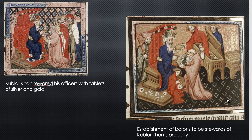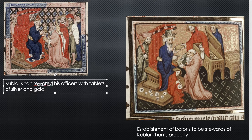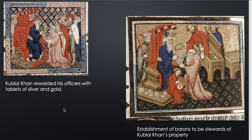Here's some more Kublai Khan — he rewarded his officers with tablets of silver and gold. Look at him sitting on his little throne with the canopy on it — the clothing and headgear we've seen before. These are his officers, supposed to be Chinese or Mongolian Chinese, and I just don't see them looking like that at all. Almost everybody looks so European.